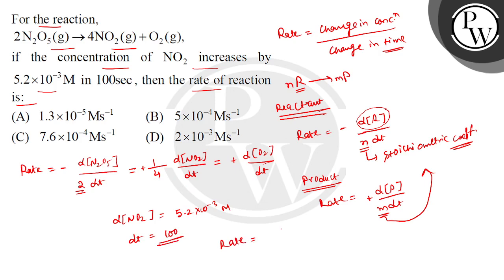If we talk about the rate, what is the rate? 1 by 4 multiply 5.2 into 10 to the power minus 3, and dt is 100. What is the rate? 1.3 into 10 to the power minus 5 molar per second.